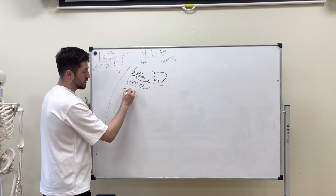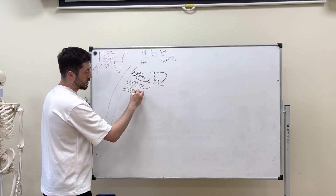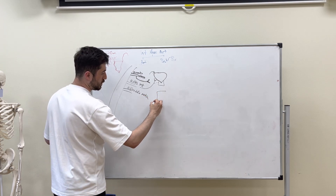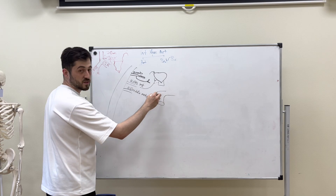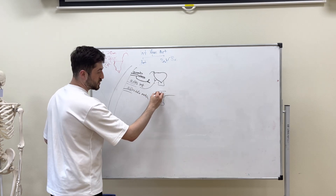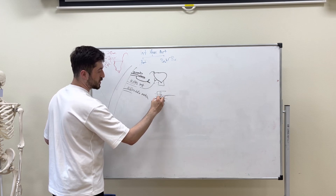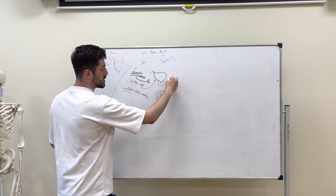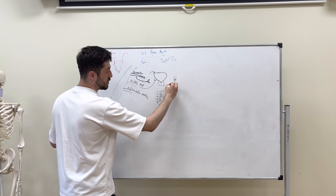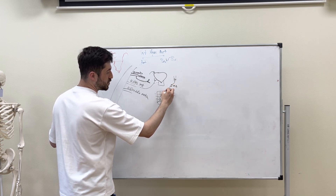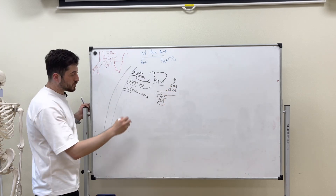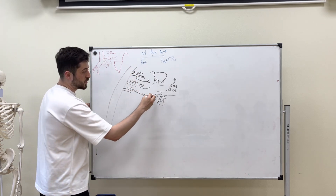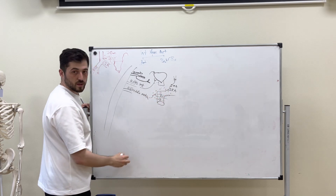The next branch is arteria rectalis media — not medial, but media. The rectum has three parts: superior, middle, and inferior. The superior part is supplied by the superior rectal artery, which comes from the inferior mesenteric artery off the aorta. The middle portion gets blood from the internal iliac artery via arteria rectalis media, and there is anastomosis between them.